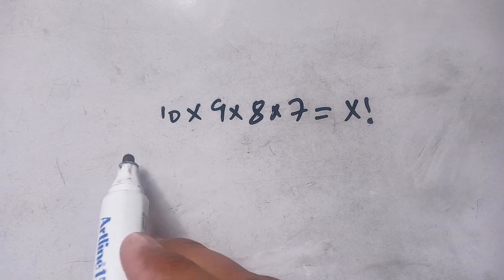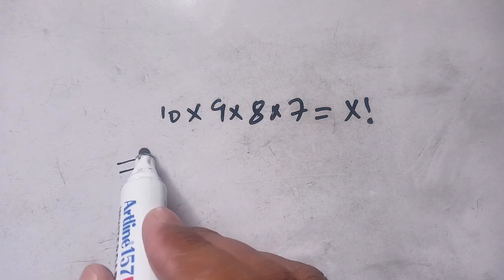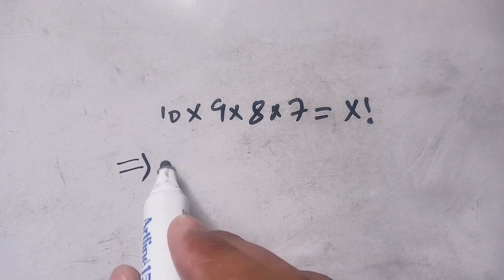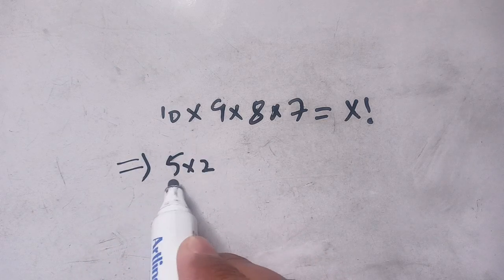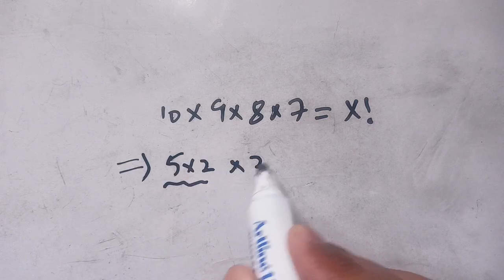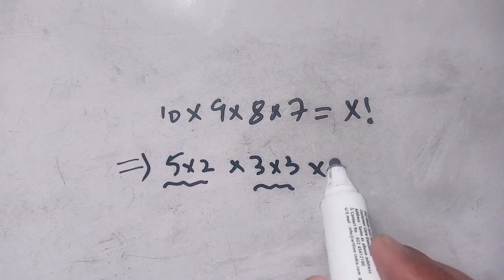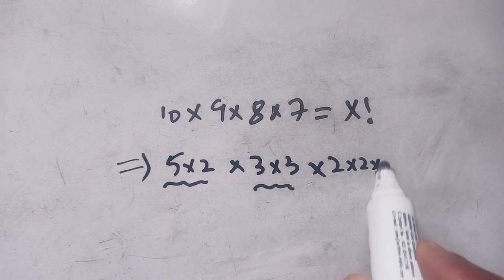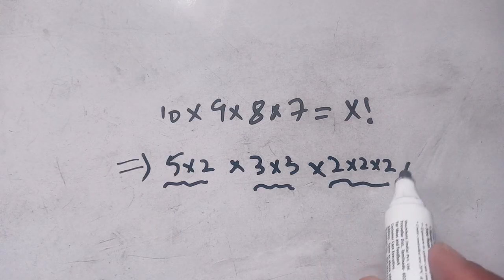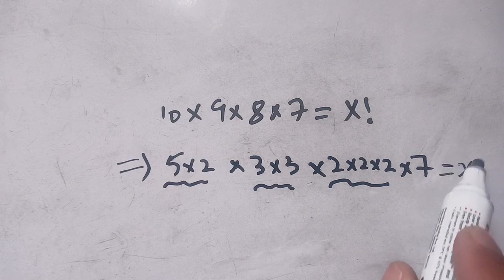In the next step, we factorize each term: 10 can be written as 5×2, 9 can be written as 3×3, 8 can be written as 2×2×2, and 7 is a prime number and stays as 7. This equals x!.